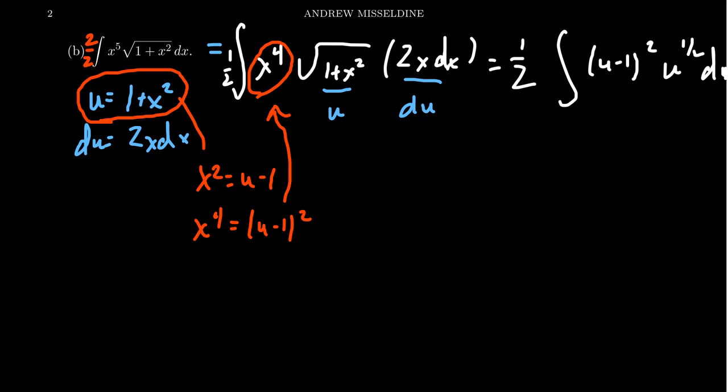The square root of 1+x² becomes a u to the one half. And then the 2x dx becomes a du. Is this a function for which we have a better chance at integrating? Well, when you look at that, even if it's not easy, the question is, is it doable, right?